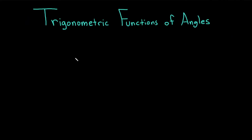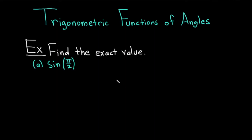Hi everyone, it's the Mathsorcer here with Chegg. In this video, we're going to discuss trigonometric functions of angles. Let's start with an example. The question says to find the exact value — we have the sine of pi over 2.